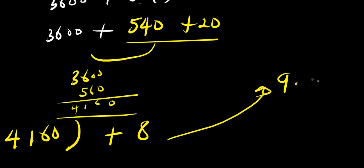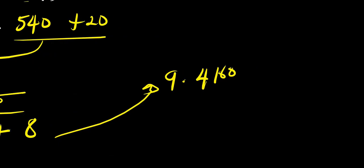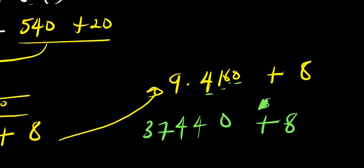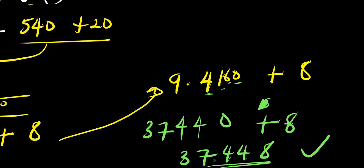Computing 9 times 4160: 0 times 9 is 0, 6 times 9 is 54 (carry 5), 1 times 9 is 9 plus 5 is 14 (carry 1), 4 times 9 is 36 plus 1 is 37. So we have 37,440. Adding 8 gives us 37,448. This is our final answer without a calculator.